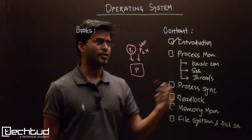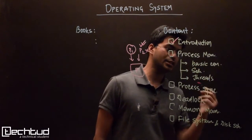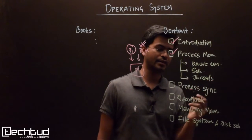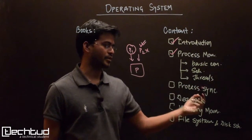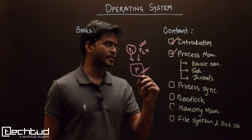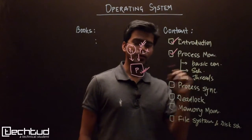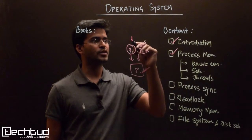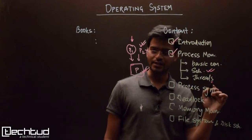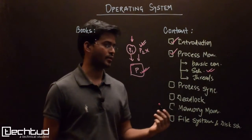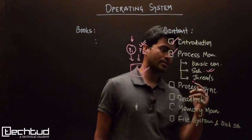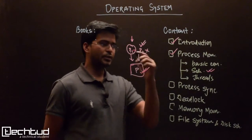When multiple processes are there, we will understand how to manage them under the process management section. First we will understand the basic concepts — the various states of a process and how it moves from one state to another, which is the transition diagram. Then we will understand scheduling, since there is only one processor and multiple processes, so we need a scheduling algorithm to decide which process gets selected to execute. We will also understand threads, which work like a process but are not actually a process, and we will cover their various advantages and differences from processes.